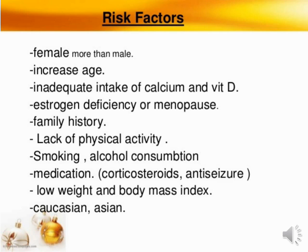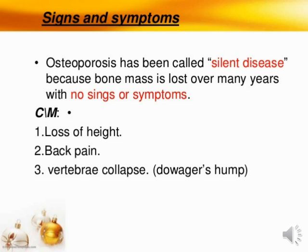Next are signs and symptoms of osteoporosis. Osteoporosis is called a silent disease because bone mass is lost over many years with no signs or symptoms — many patients also do not show any symptoms at all. One sign is loss of height, which occurs because weakening and deterioration of bone leads to improper bone development and growth, altering height.